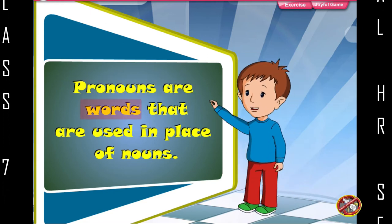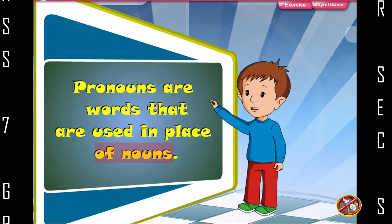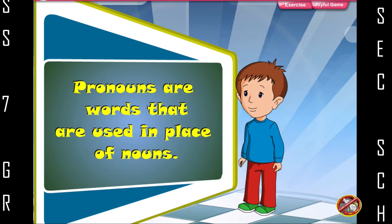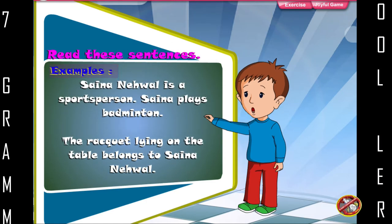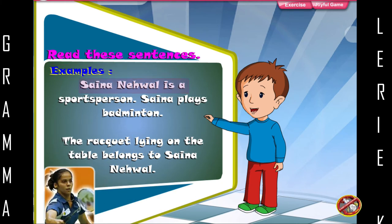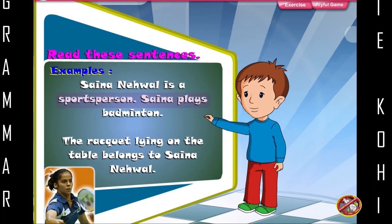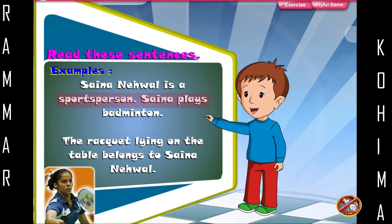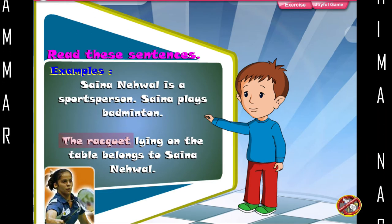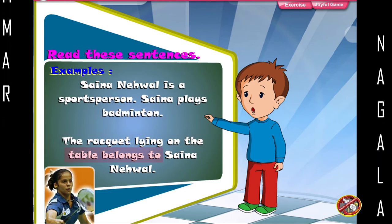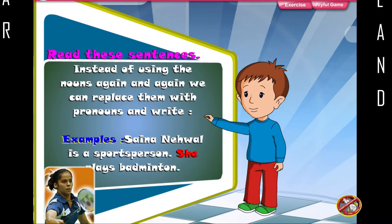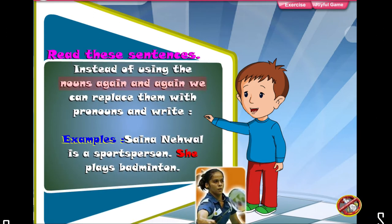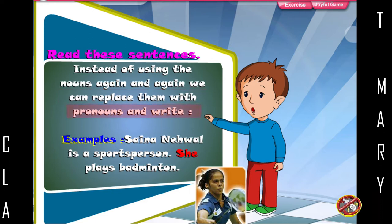Pronouns are words that are used in place of nouns. Read these sentences. Examples: Saina Nehawal is a sports person. Saina plays badminton. The racket lying on the table belongs to Saina Nehawal. Instead of using the nouns again and again, we can replace them with pronouns.